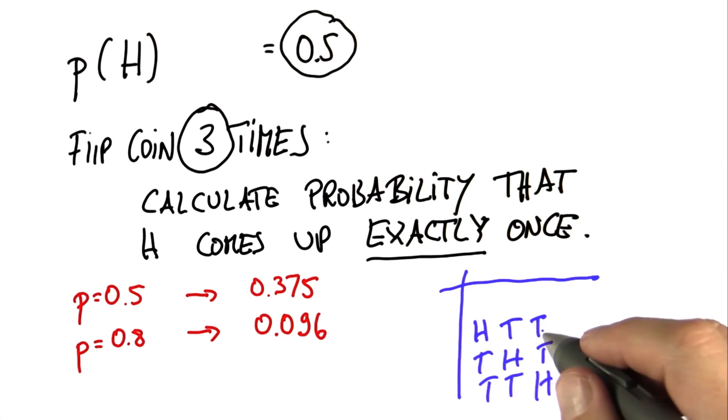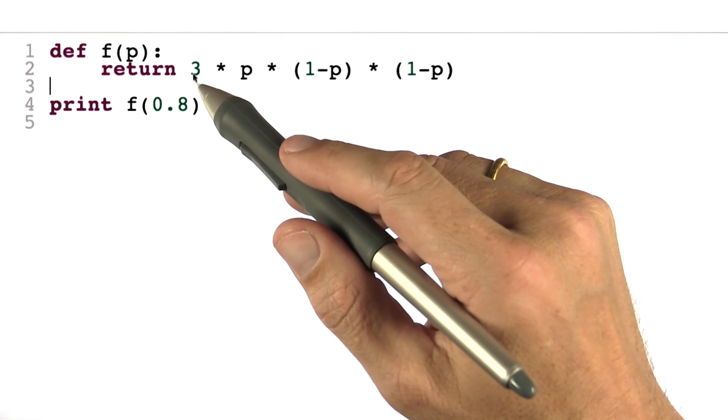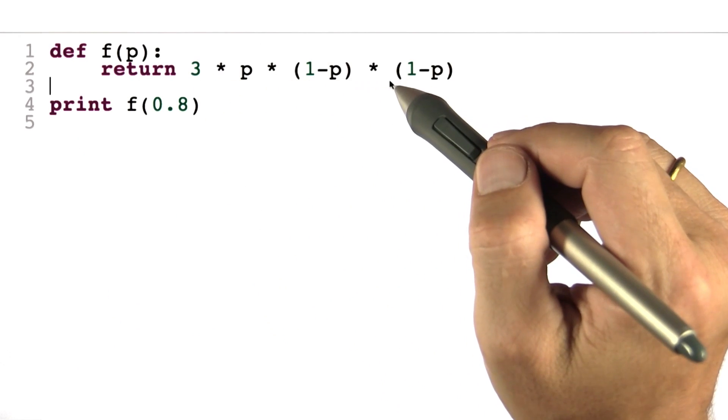Now each has exactly the same probability of p for heads times 1-p times 1-p. So to get all three of them together, we just multiply this by 3. And this is how it looks in source code, 3 times p times 1-p times 1-p.